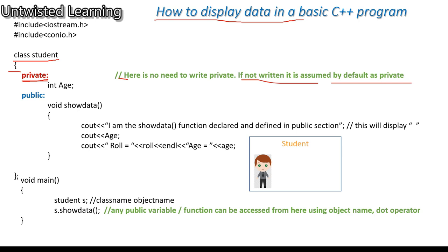Followed by the public section, in which I have only given a function called show data. Inside show data, I am displaying a message and the values of age and roll number. Then inside void main, I am creating one object of student class called S. The syntax is: class name, object name, then a semicolon.